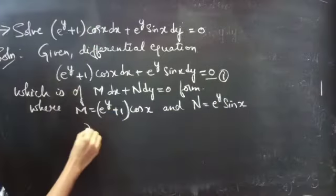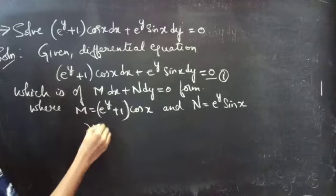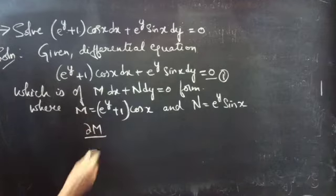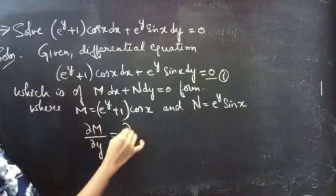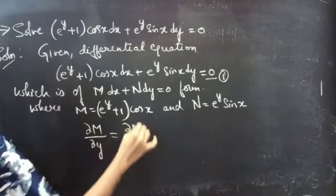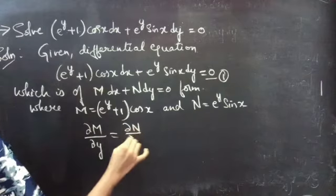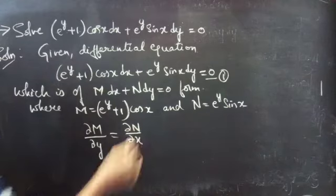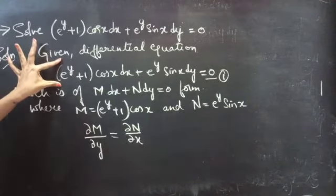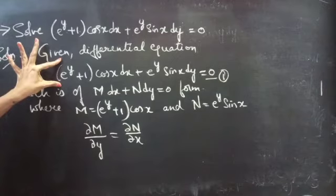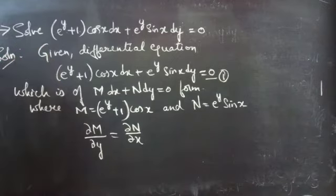If the partial derivative of M with respect to y equals the partial derivative of N with respect to x, then we will say that equation 1 is an exact equation.